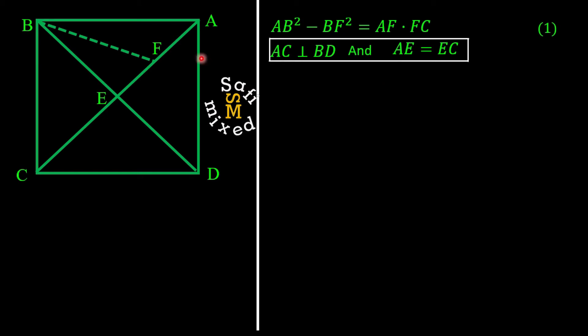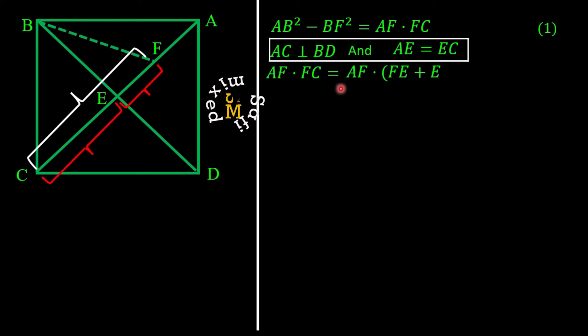So I would like to begin by finding first the scalar product of AF and FC, that is AF·FC. From the geometry of the figure we see that the length element FC can be expressed as the sum of FE plus EC. So I can express the right side of this equation as AF·(FE + EC) where I write FC = FE + EC.